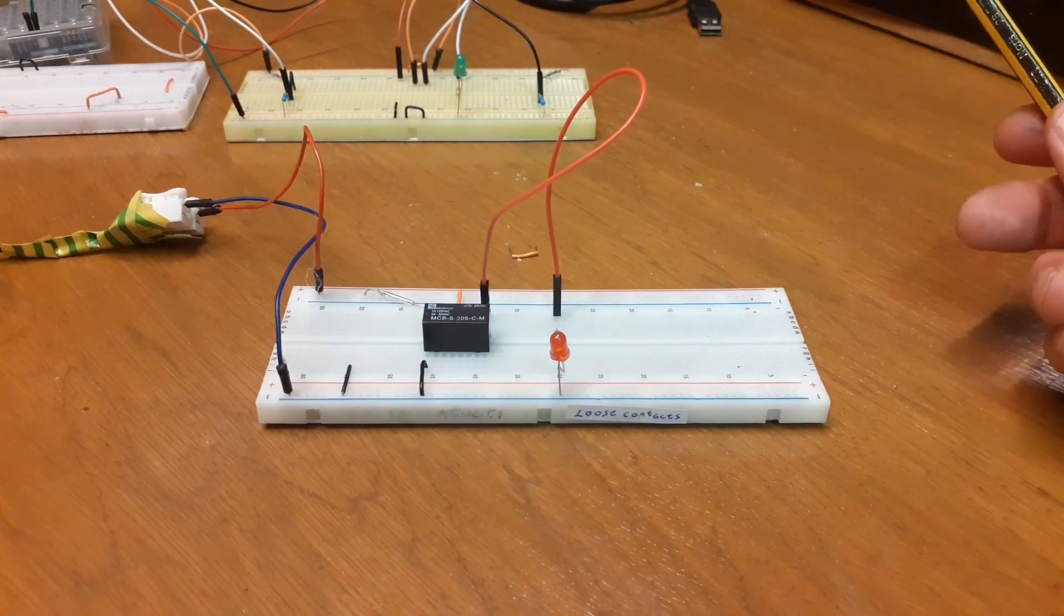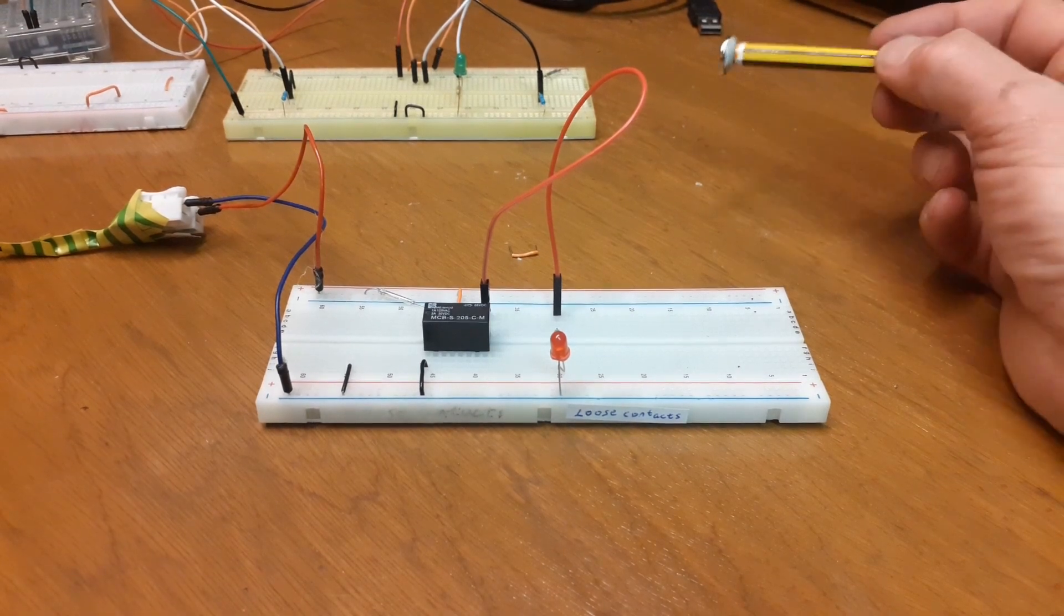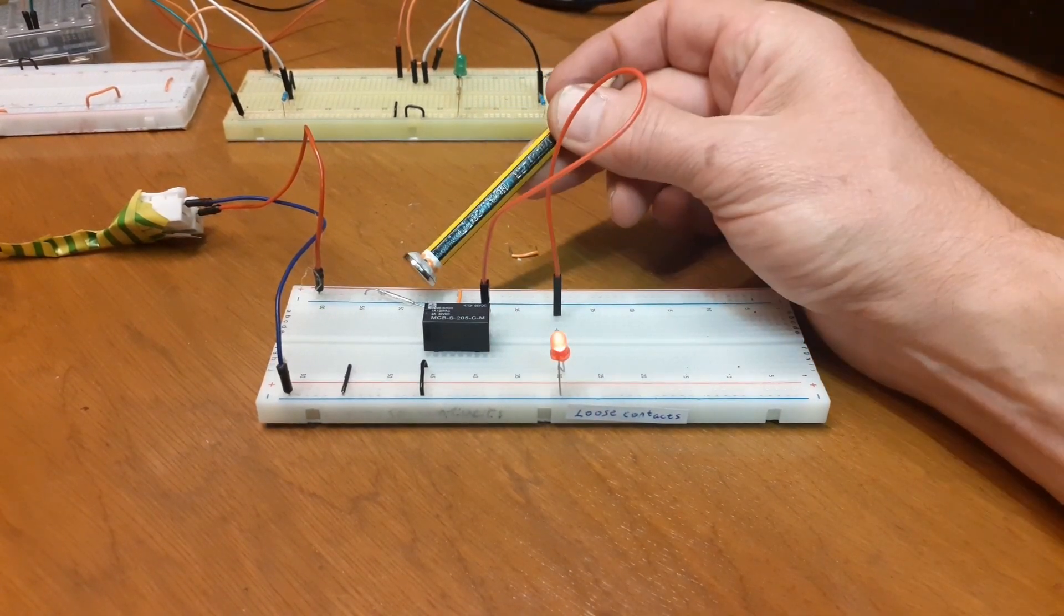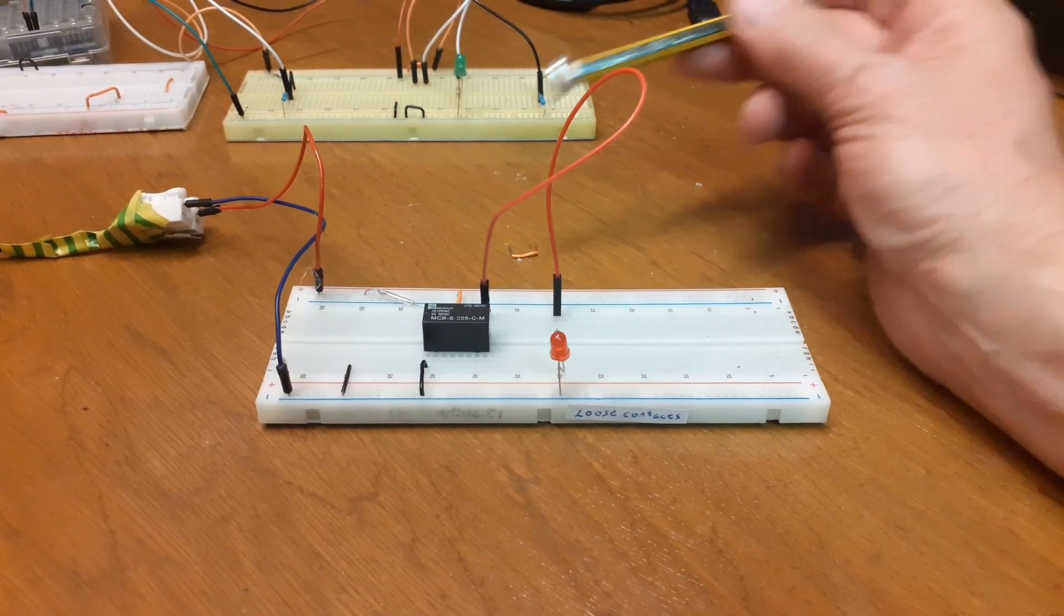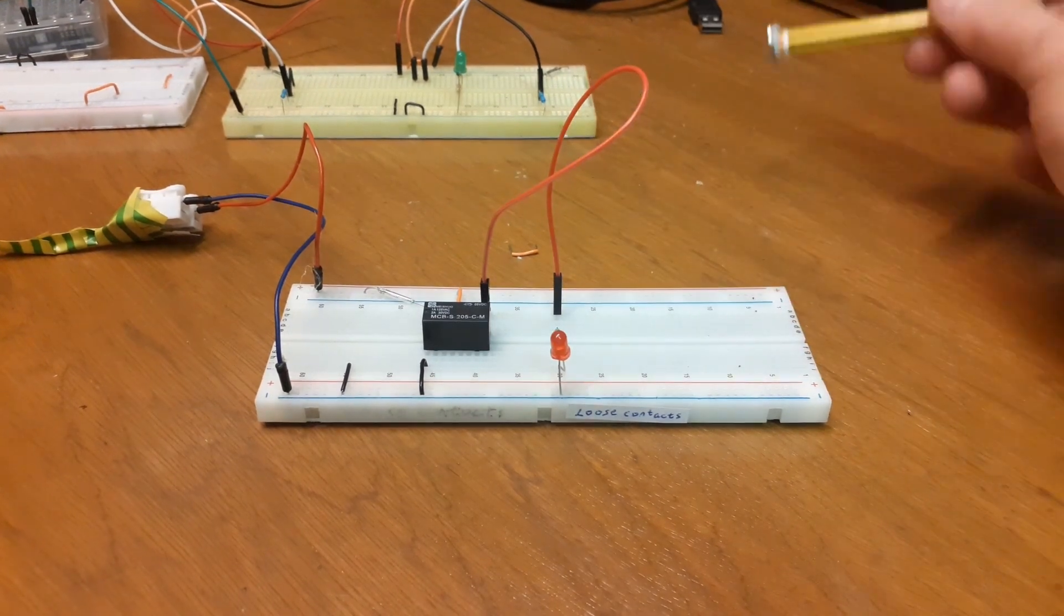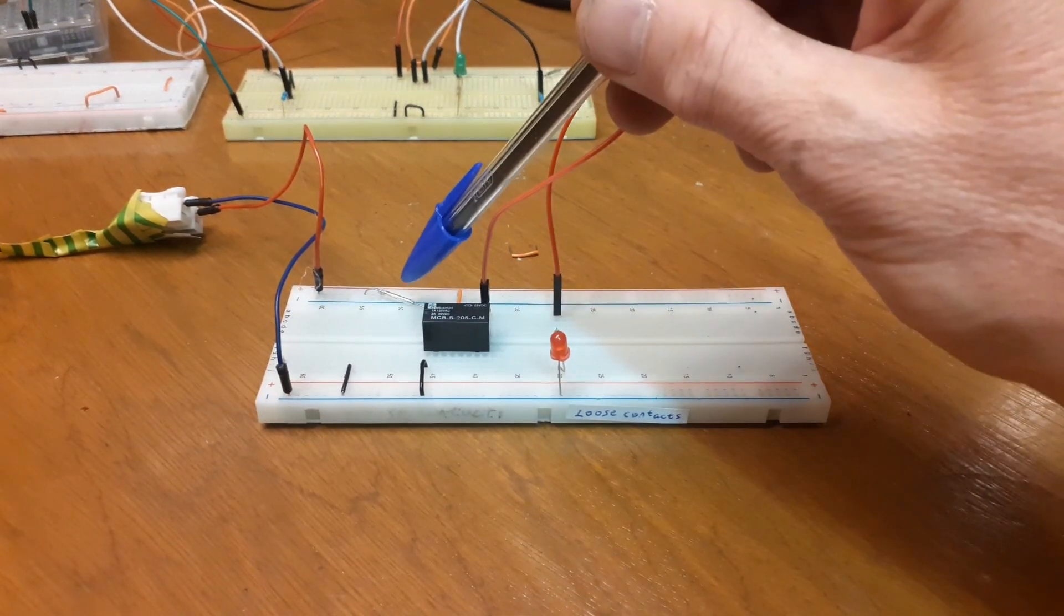Here again we're going to use the reed switch just for on and off, but we're running it through a relay. So we do this, now it's on, off. So what we're doing is we're activating the relay coil.